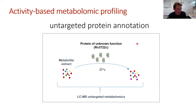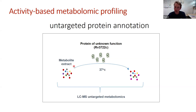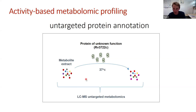To answer what the enzyme does, we used a technique called activity-based metabolic profiling (ABMP) — an untargeted protein annotation technique. We purified the unknown enzyme rv3722c and incubated it with a metabolite extract from the same organism. This extract serves as a substrate library: if the enzyme's substrate is present, it gets converted, and we use untargeted metabolomics to compare the extract before and after incubation, expecting substrates to decrease and products to increase.